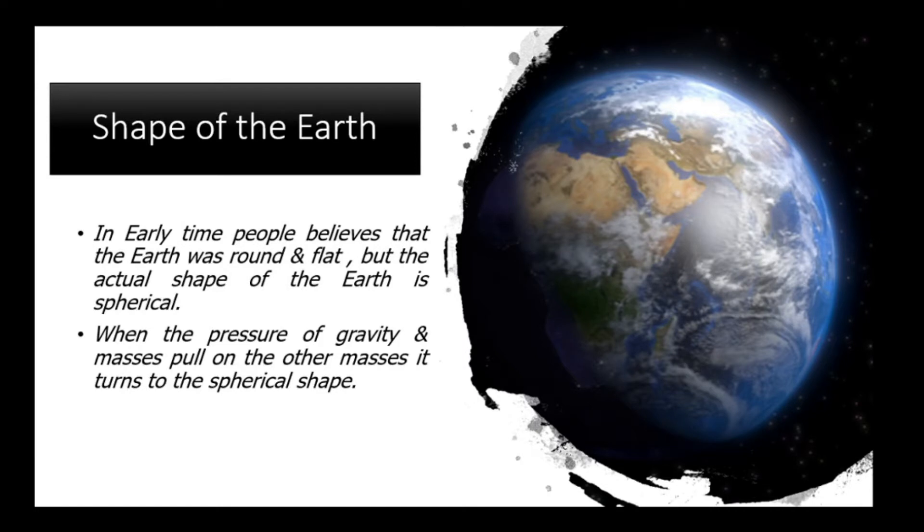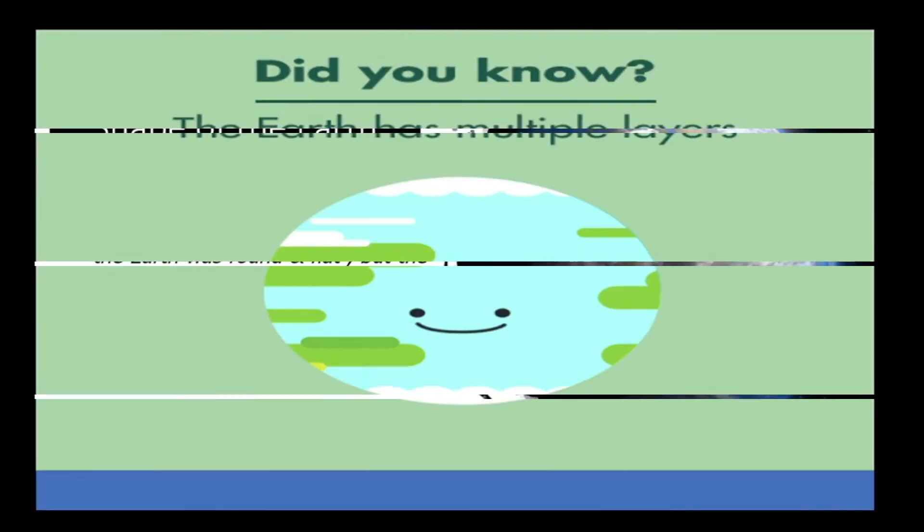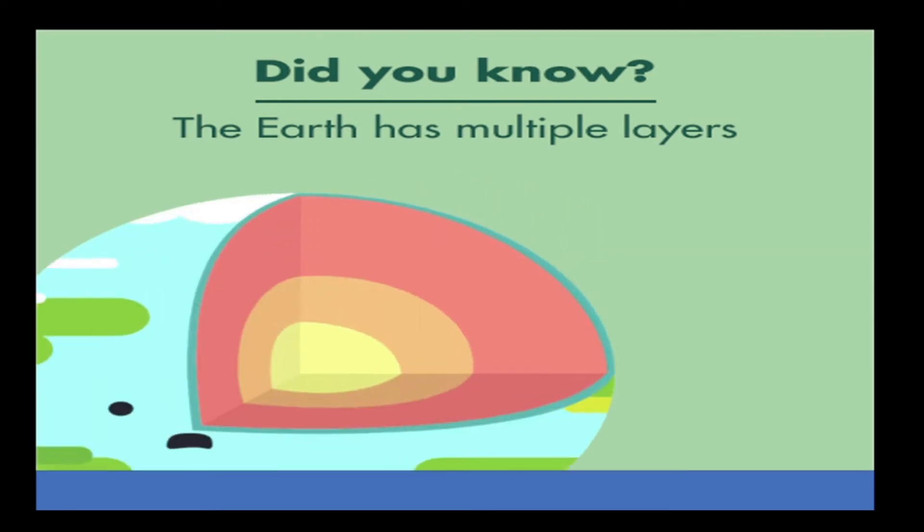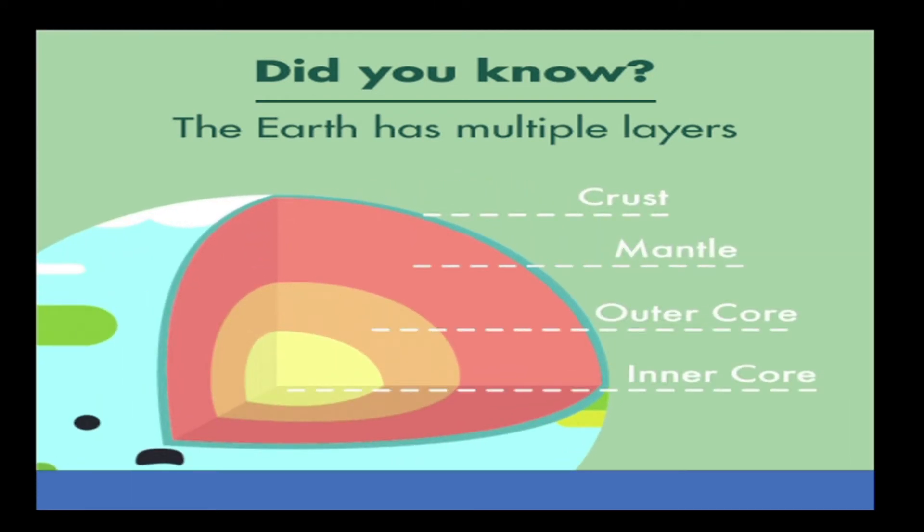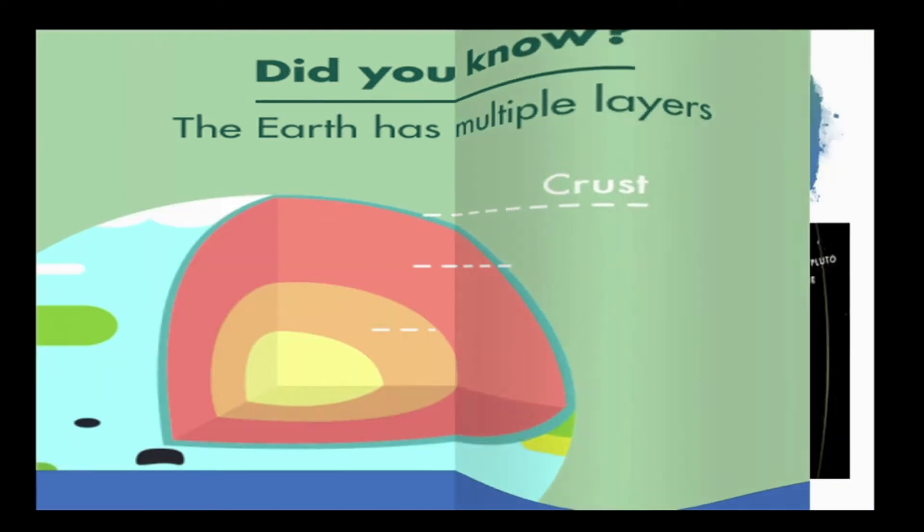In early times, people believed that the Earth was round and flat, but the actual shape of the Earth is spherical. When the pressure of gravity and masses pull on other masses, it turns to a spherical shape. Did you know that Earth has multiple layers? Crust, mantle, outer core, and inner core.